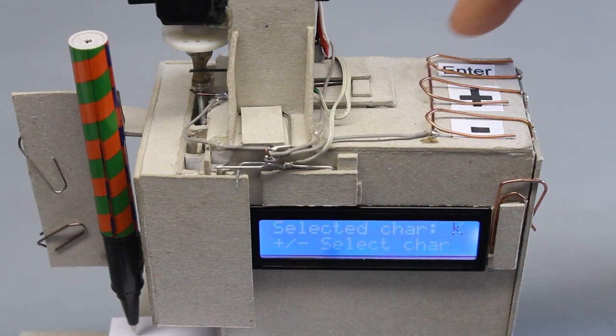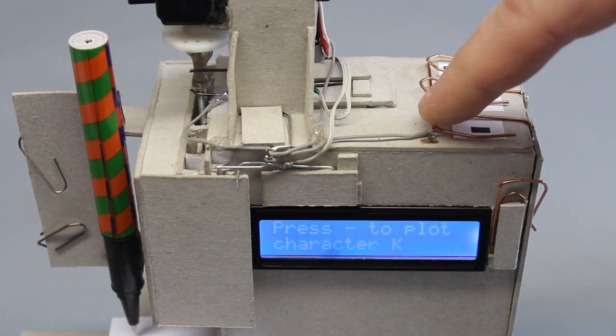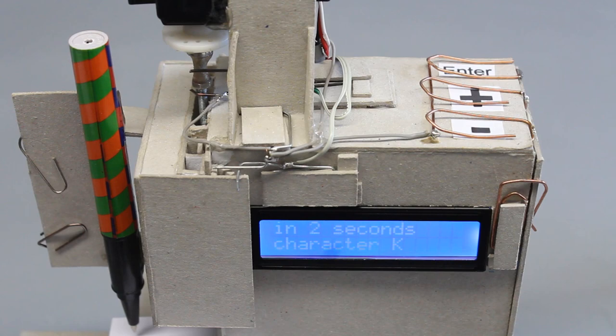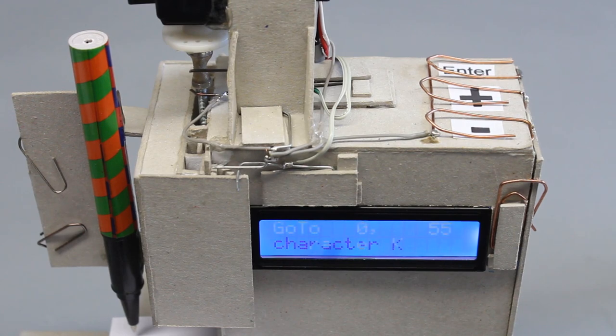You can plot capital letters or digits. After choosing a character and confirming to plot, the machine starts its job.